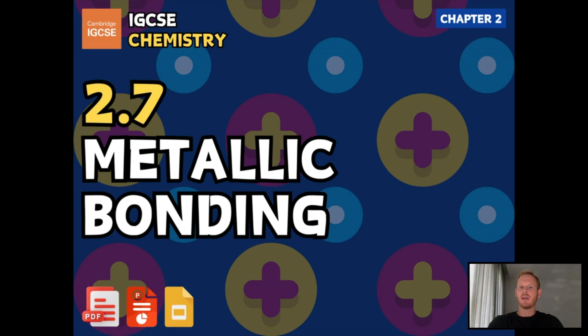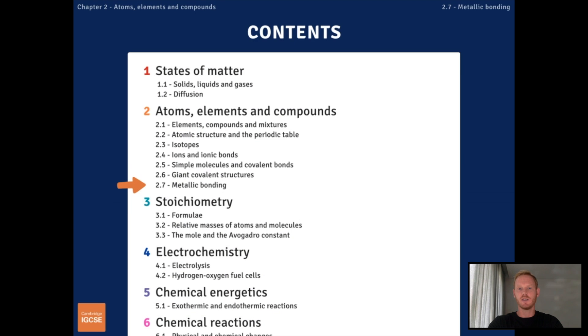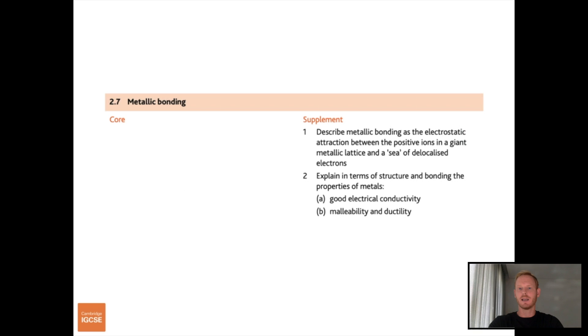Hello and welcome to another complete Cambridge IGCSE chemistry lesson where you'll learn everything you need to know on topic 2.7, metallic bonding. We'll be following the Cambridge syllabus exactly and covering everything you need for your final exam. Please note this is only relevant for those taking the extended course.